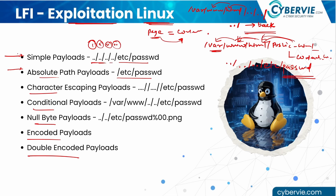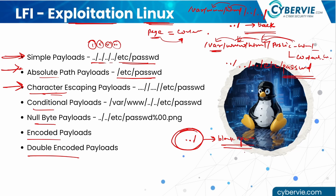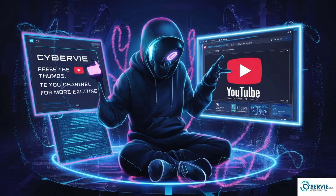We can craft simple payloads like '../../../../../etc/passwd', or try absolute path payloads like '/etc/passwd'. If there are security mechanisms like character escaping — where the server replaces '../' with a blank space — our payload won't work, so we craft character-escaping bypass payloads. We can also use conditional payloads, null byte payloads, encoded payloads, and double-encoded payloads. If you're enjoying this video, don't forget to like and subscribe, and let us know any queries in the comments.